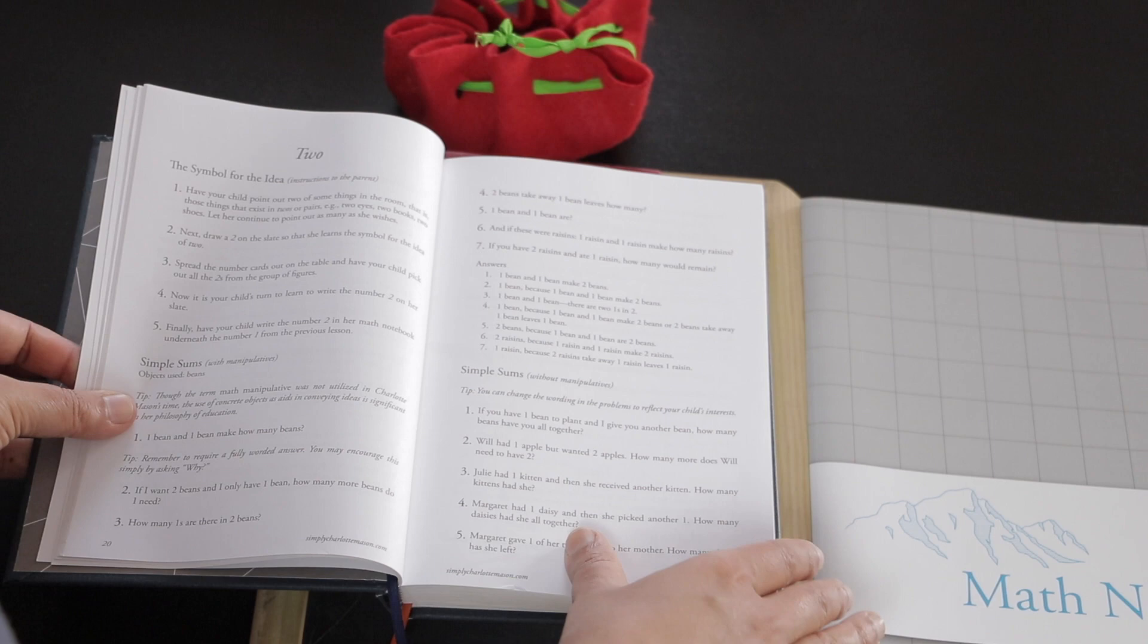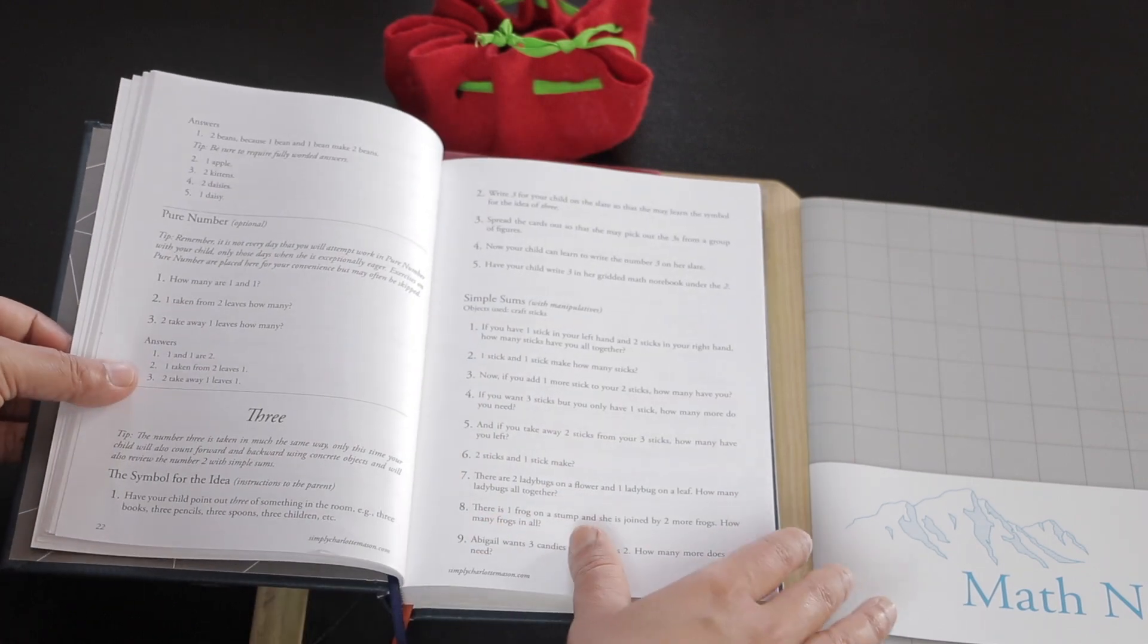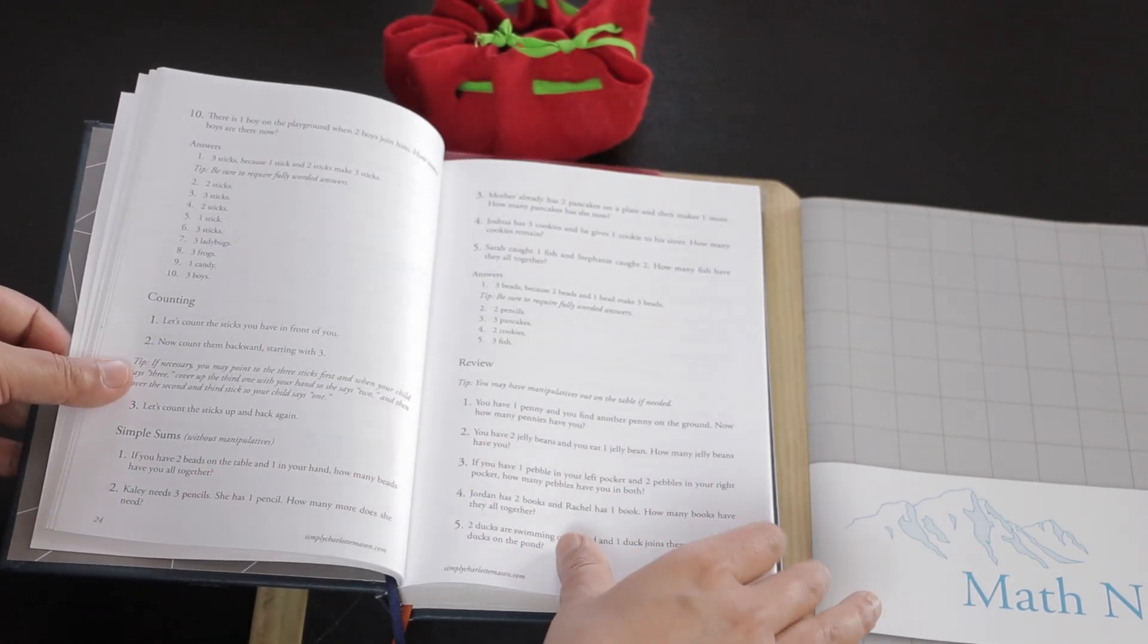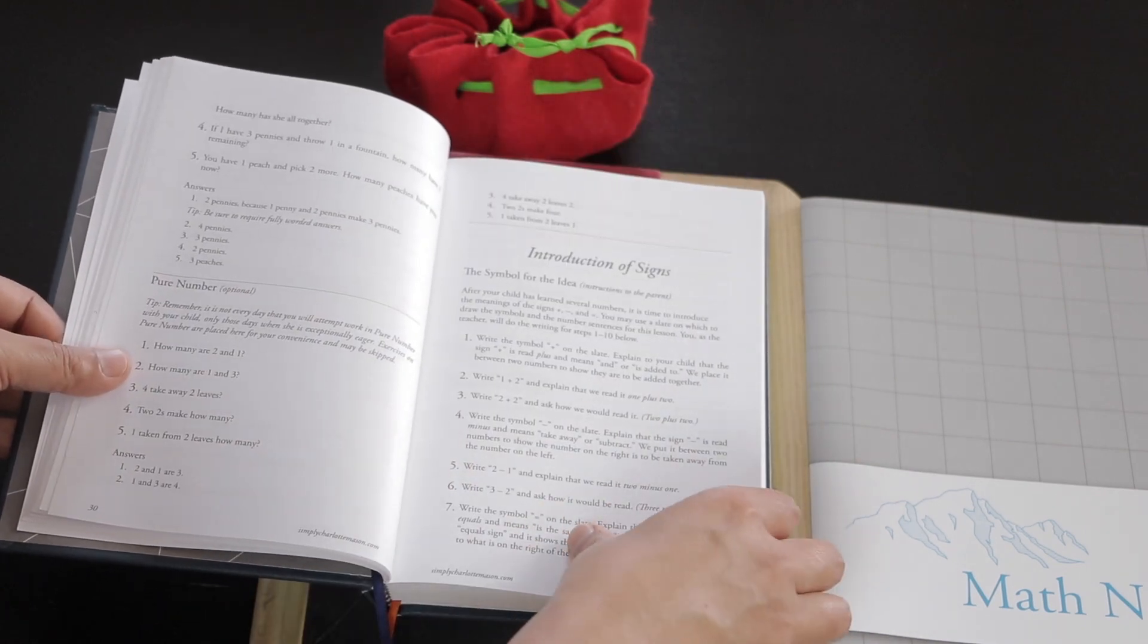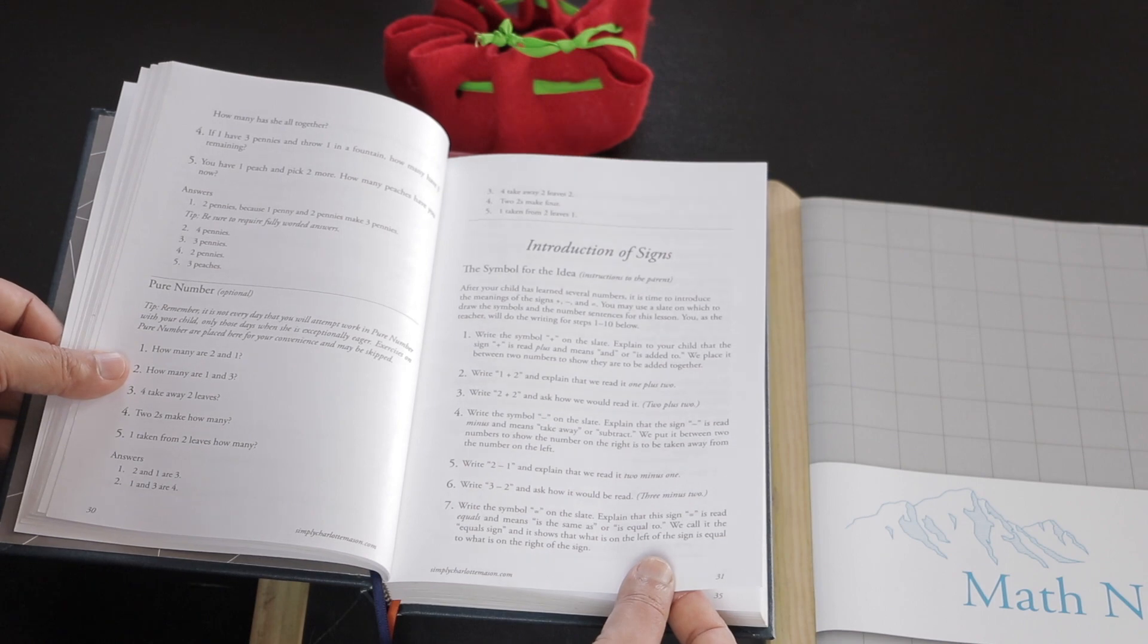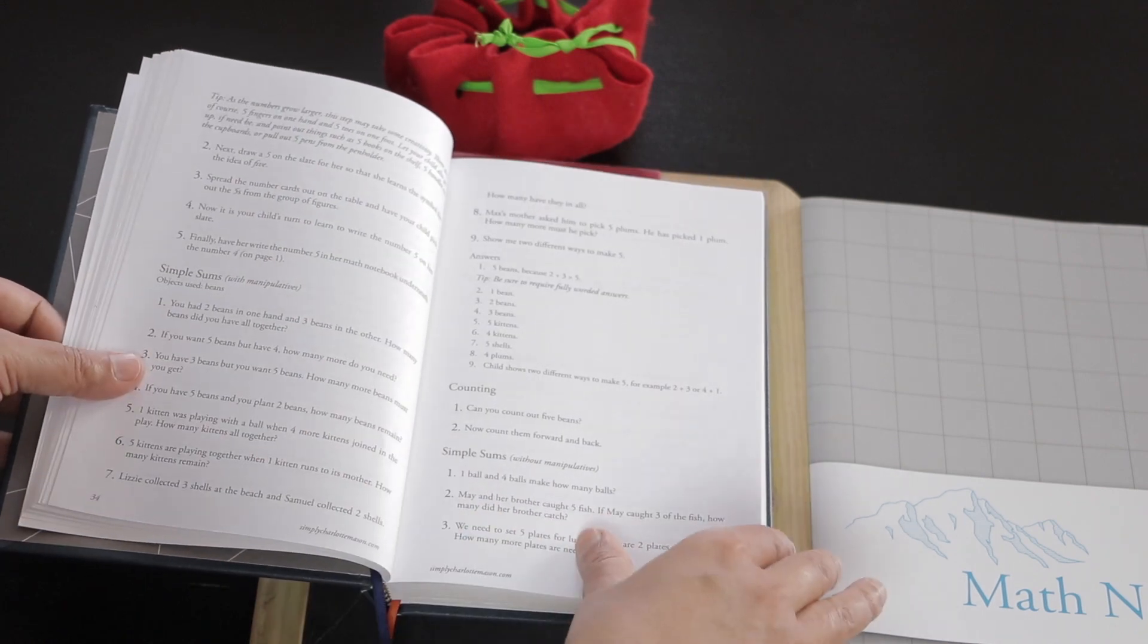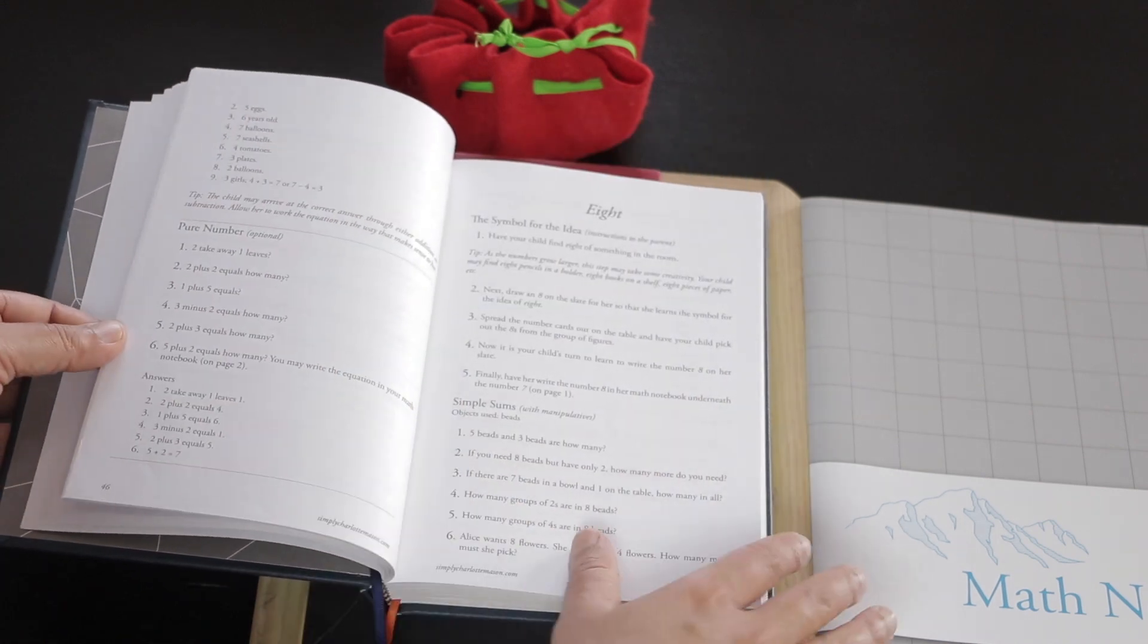You give the child certain number cards and ask them to identify them. We use objects around the house as manipulatives which I will show in a moment. The book also talks about the basic signs like equal to, plus sign and minus sign.